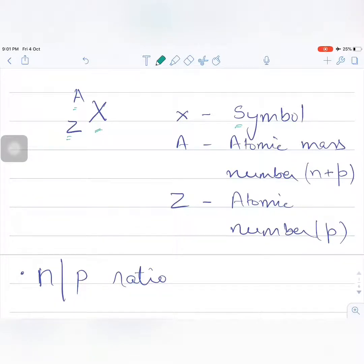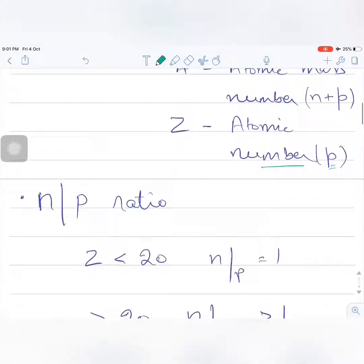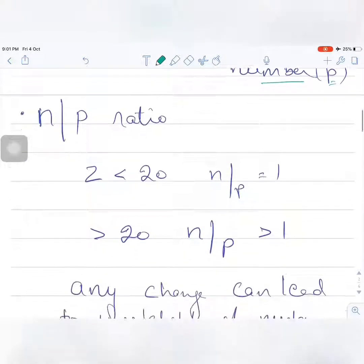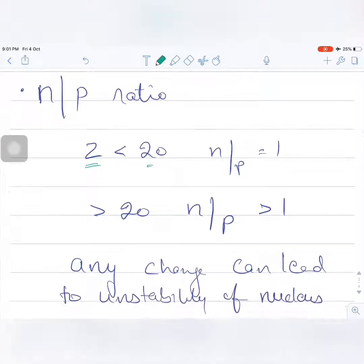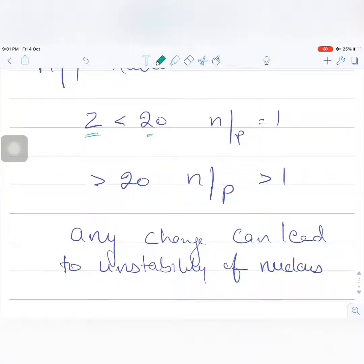We need to know this because the n/p ratio matters. The n/p ratio is one for atomic number less than 20, but for atomic number more than 20, the n/p ratio increases more than one. This means at higher atomic numbers, more neutrons are required to keep the atoms stable.